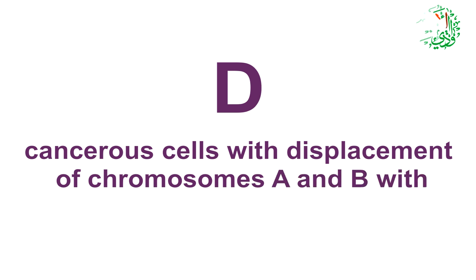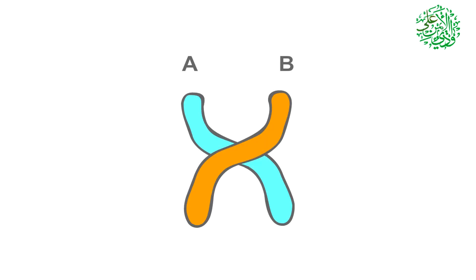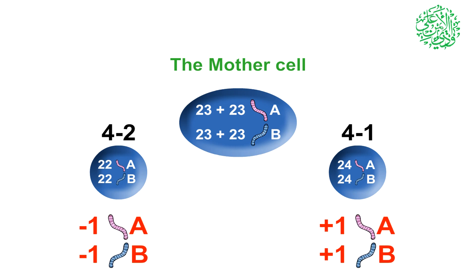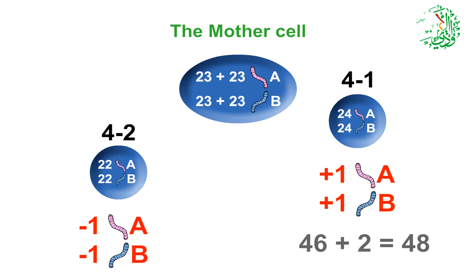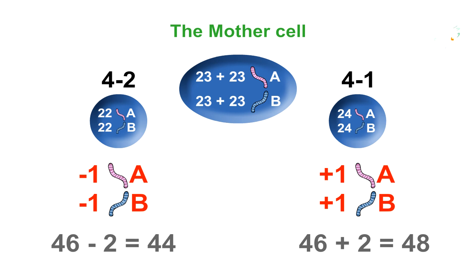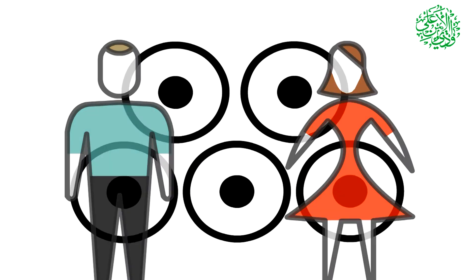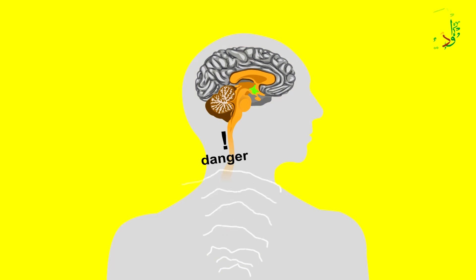Category D: cancerous cells with the displacement of chromosomes A and B with unequal number. In these cells, division in both sets of chromosomes A and B suffers from disorder, and the overall number of chromosomes in each cell is also unequal. Cancerous cell number 1 has one extra chromosome A and one extra chromosome B; cancerous cell number 2 lacks one chromosome A and one chromosome B. The overall charge of both cells is usually neutral. These cancerous cells are benign in both males and females, and usually commit suicide or are controlled by the defense system, producing benign tumors.